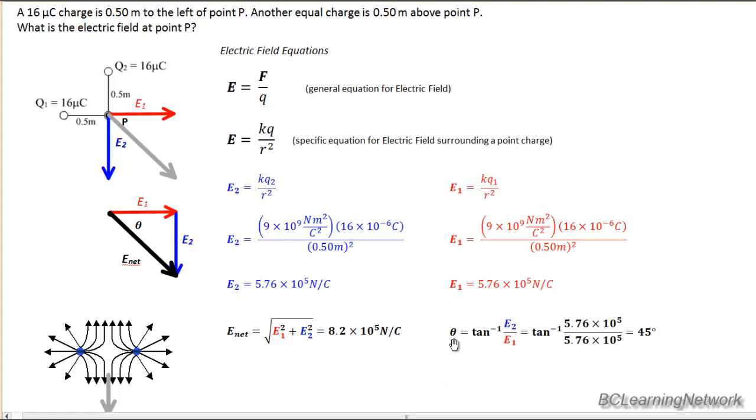So my angle will be tan inverse of opposite over adjacent is, as expected, 45 degrees. So my net electric field is 8.2 times 10 to the fifth newtons per Coulomb at an angle of 45 degrees south of east.